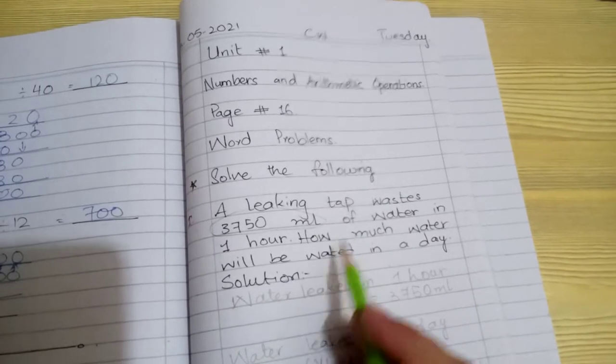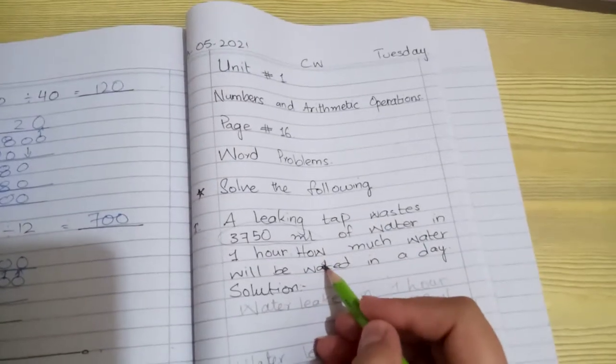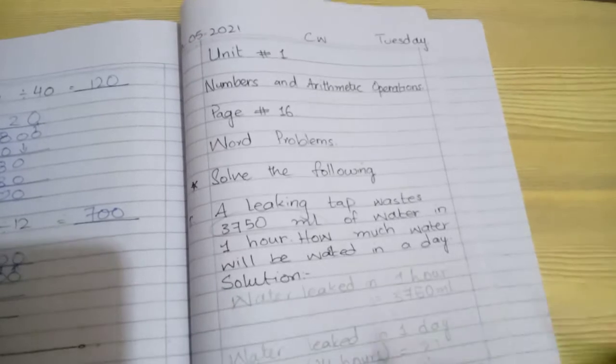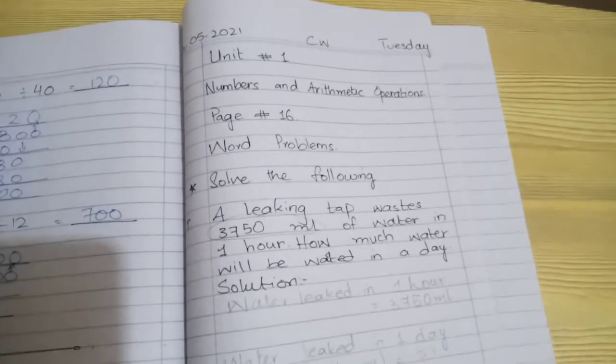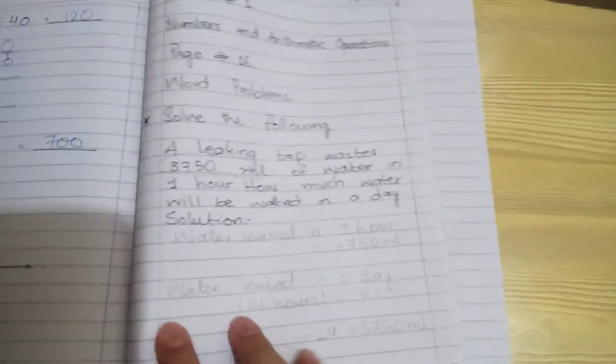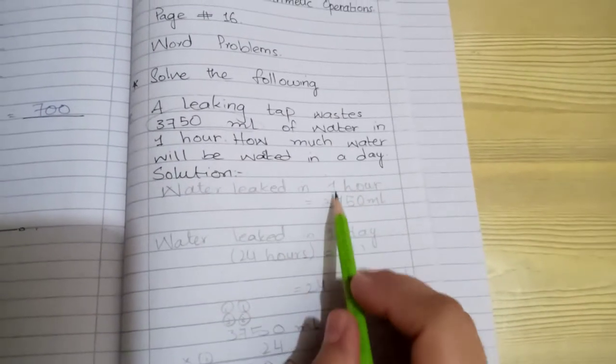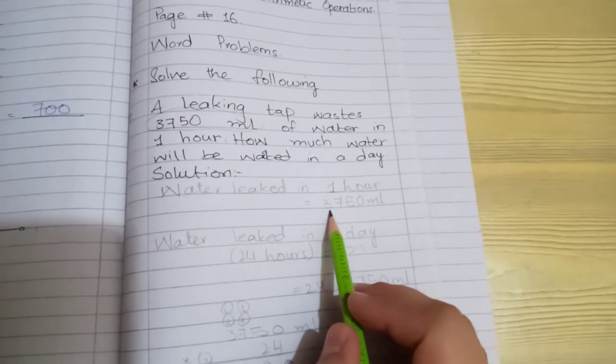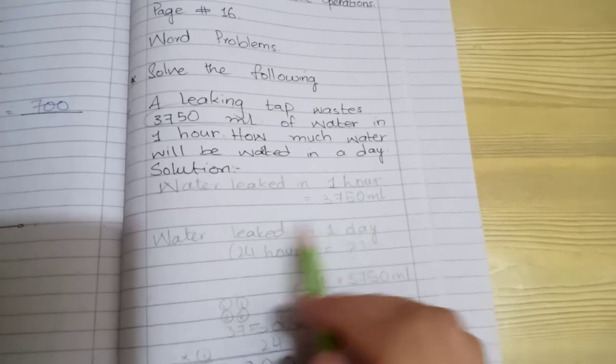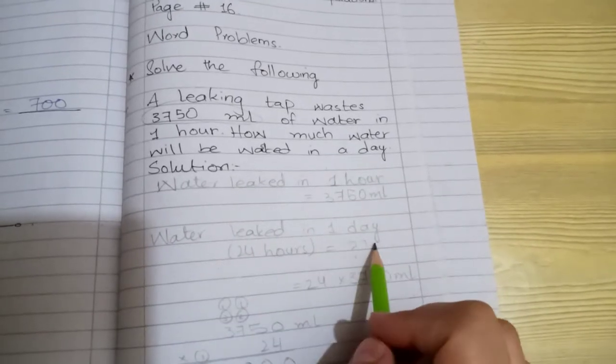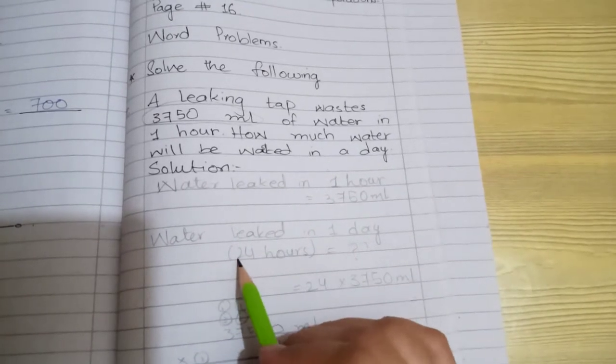So how much water will be wasted in one day? Water leaked in one hour is given in the question as 3750 ml. In one day, how many hours are there? 24 hours.